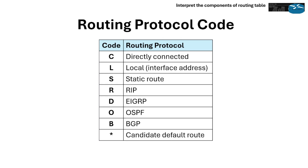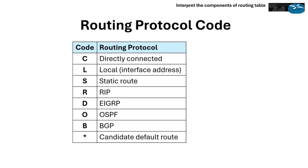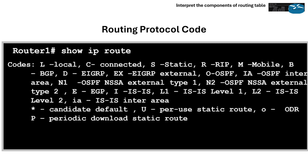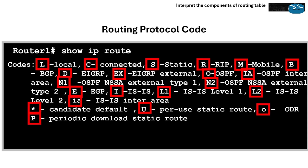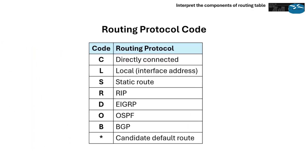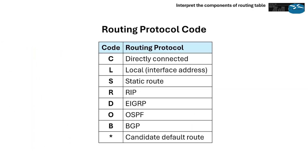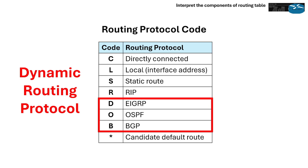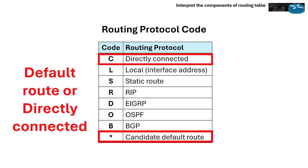Let's start with the routing protocol code. Each route in the routing table begins with a code that identifies how the route was learned. When you run the command 'show IP route' on a Cisco router, you'll see a list of routes. Each route begins with a code — a single letter or abbreviation — which indicates how that route was learned. These codes help network engineers quickly identify whether the route was manually configured, learned via a dynamic routing protocol, or is the default route or directly connected.